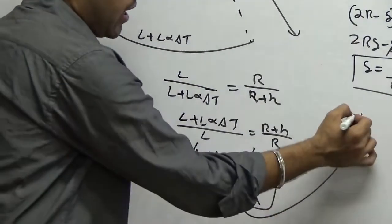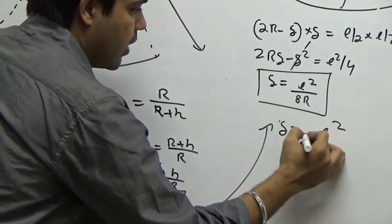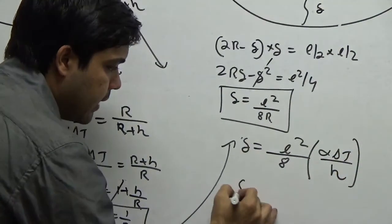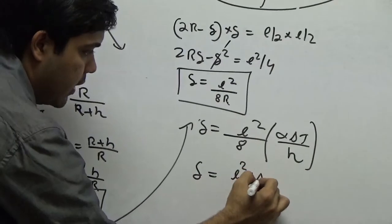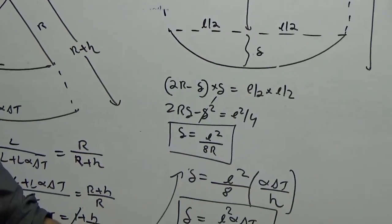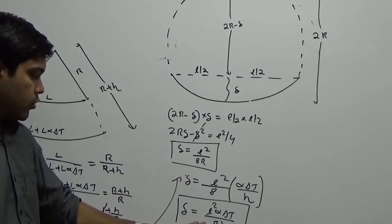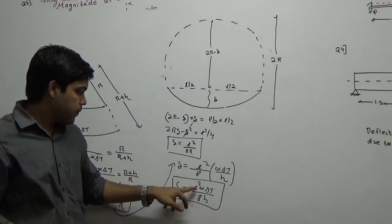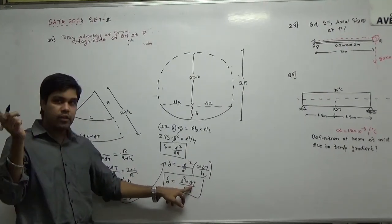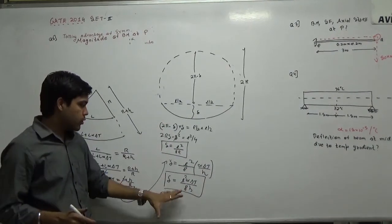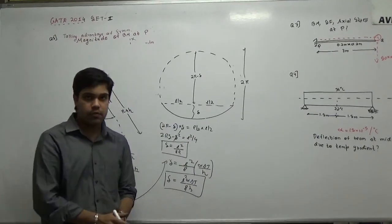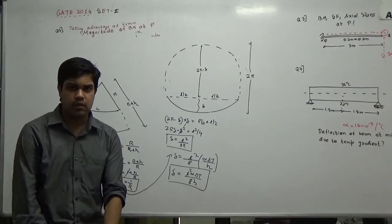If I substitute this 1 by R back here, I get delta is equal to L square upon 8 into alpha delta T upon H. Finally, my deflection formula is L square alpha delta T upon 8H. There is also an IES problem asked for just a formula, but in this GATE problem, they are asking you the value. So for that you know L, your L is 3 meters, your alpha value is 1.5 into 10 power minus 5. Delta T will be the difference in temperature, so you subtract 72 and 36. 8 you know and H is the depth of the beam. This way you can substitute the values and find the answer. This completes the problems on 2014 set 2. The next video will be on the 2013 questions on structures.